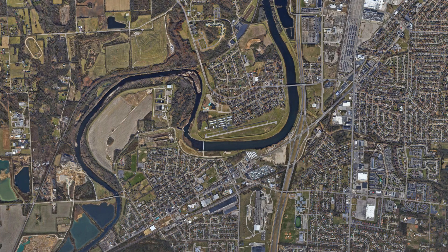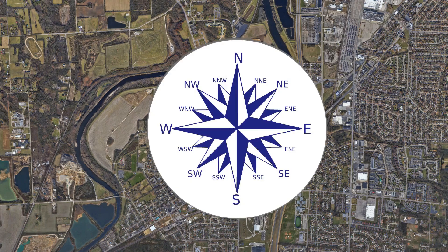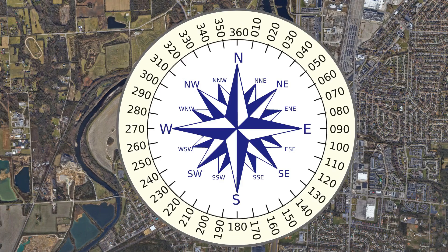In aviation, we have a need to communicate navigation instructions using language more precise than the basic north, south, east, and west that you may be used to. So to deal with this, we divide the compass rose up into 360 degrees and use these numerical values to express directions.